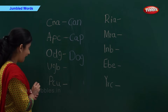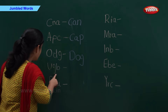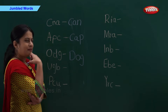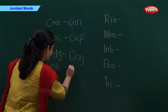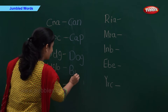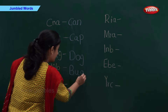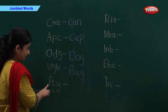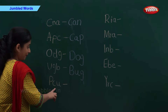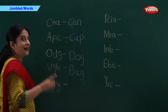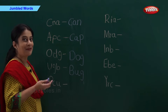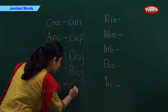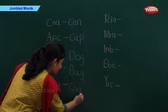And now we have U-G-B. U-G-B will be written. B-U-G. B-U-G. And next word, P-C-U. Now you tell me. C-U-P.